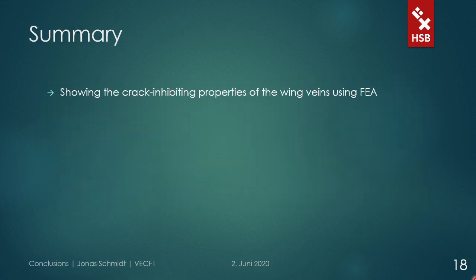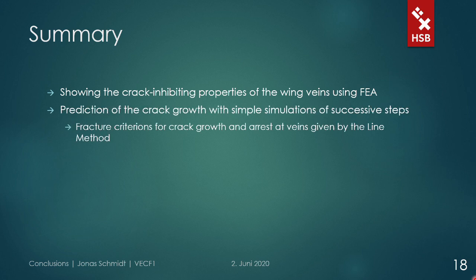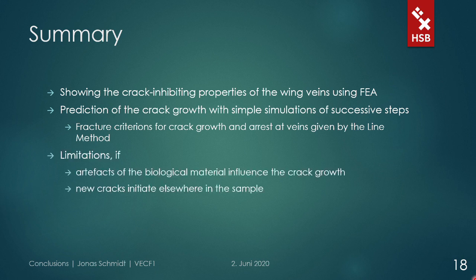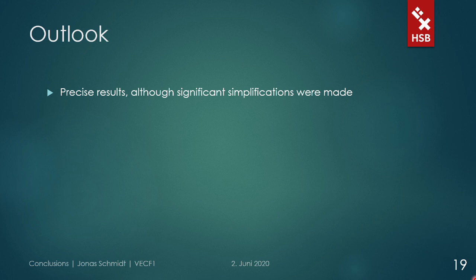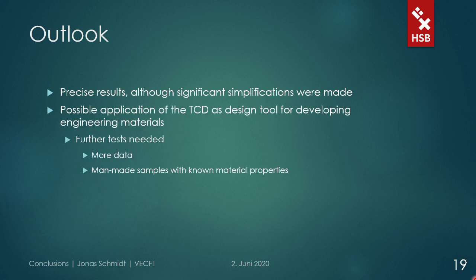Generally, we have seen the fracture toughness-increasing and crack-arresting properties of the wing veins using finite element analysis. Furthermore, it was possible to predict the fracture behavior of the wing via simple simulations and successive observations of crack growth. The main fracture criterion was given by the line method, which is one of very few times a complex biological material was described with a theory of critical distances. Perhaps we even identified another fracture criterion given by the local stress maximum behind the vein, though further analysis would be needed to clarify that. Of course we face limitations — in one step of the second model, artifacts in the material caused a new crack initiation at a completely different position, which could not be predicted with the TCD. Nevertheless, it is quite promising that pretty precise results were generated even with the simplifications made. This favors the use of the theory of critical distances as a design tool in the development of complex engineering materials with similar barriers, though further tests would be needed.